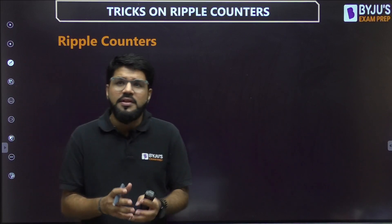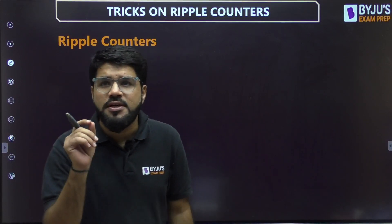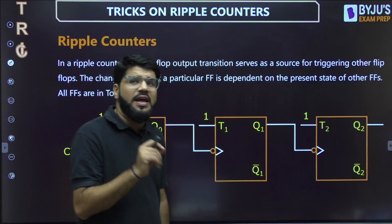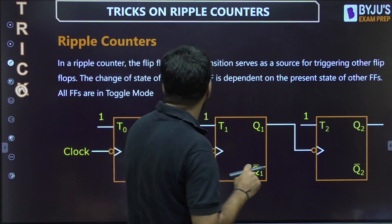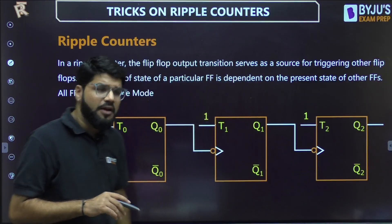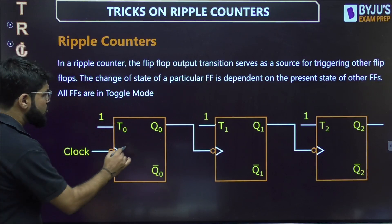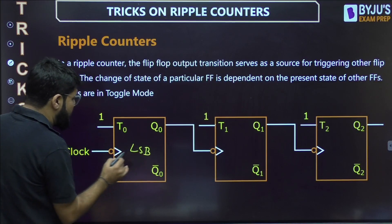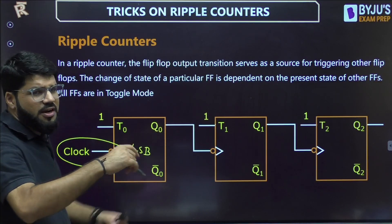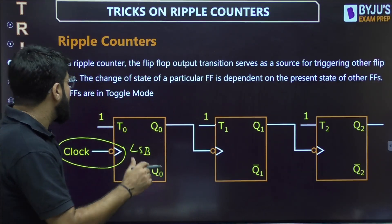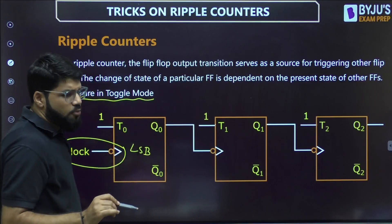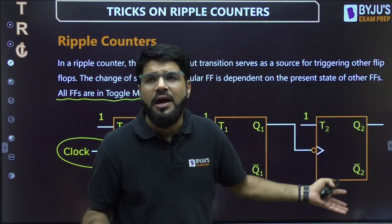In a ripple counter, the clock is only served to the LSB flip-flop, and the output of every flip-flop serves as the clock to the next flip-flop. Every flip-flop output serves as a source for triggering the other flip-flops. I have considered this as the LSB flip-flop where the clock is applied, and I have taken negative edge triggered here — it could be any other type of flip-flop.